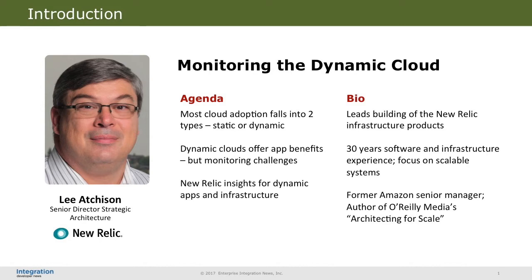Lee leads the building of the New Relic Infrastructure Products and has helped New Relic architect a solid service-based system. He brings 30 years of software and infrastructure experience to his current post, with specific expertise in building highly available systems. Prior to New Relic, Lee was a senior manager at Amazon.com for seven years, where one of his focuses was cloud-based and scalable systems. You may know his name as he's the author of O'Reilly Media's just-released Architecting for Scale.